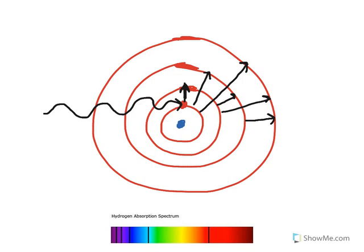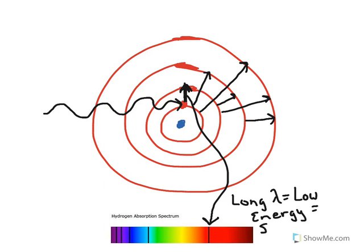The smaller the transition, the less energy it takes. And we have seen that lower energy is a longer wavelength. So this small transition would correspond to an absorption line in this spectrum associated with a long wavelength. Long wavelength is low energy, is a small transition.